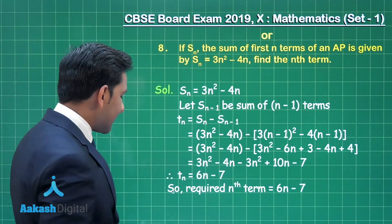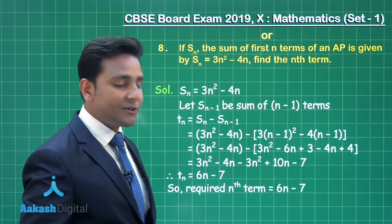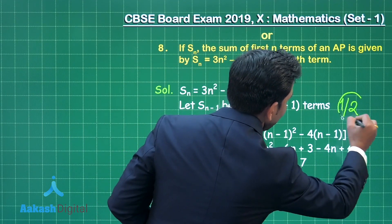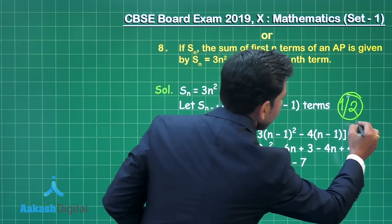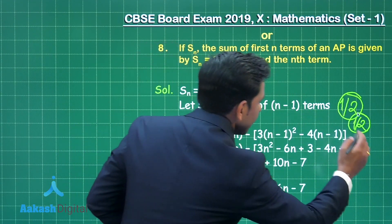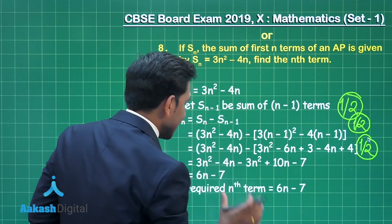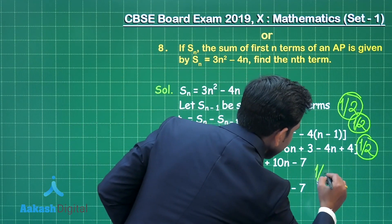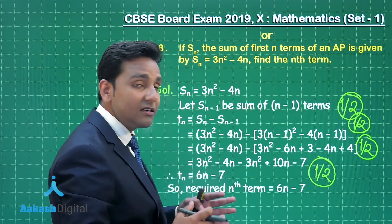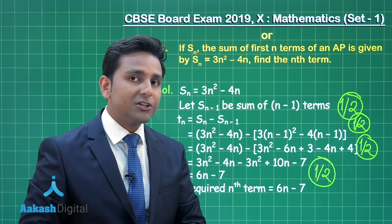Now let us discuss the marking scheme for the optional part. The first step gives you half a mark, the next step gives another half mark, and this calculation step gives another half mark. The rest half mark is based on the final expression representing the nth term of this given arithmetic progression — that is 6n minus 7.